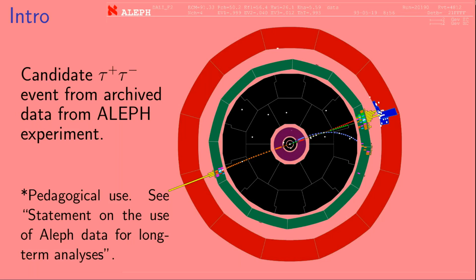Before we go too much further, let's talk about what that picture is in the first slide of the video. This picture is of a candidate tau plus tau minus production event from the archived data from the Aleph experiment. The Aleph detector was a cylindrical detector, and what we're seeing here is a cross-section of the detector. The various concentric structures are different parts of the particle detector.